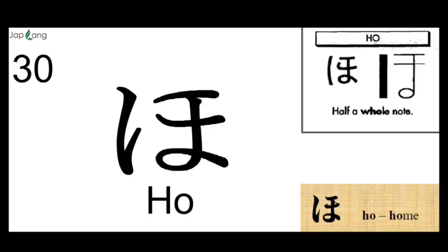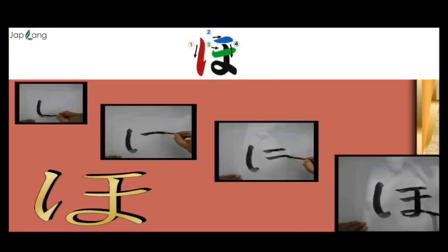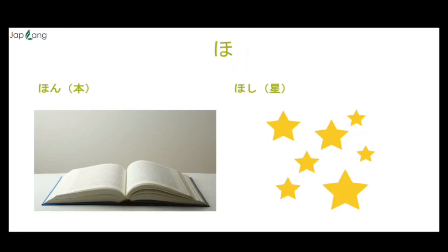The last character is HO. Half a whole note — HO, as in whom. This is how we write HO. HO as in Hon — or Hoshi — Hoshi means star, and Hon means book.